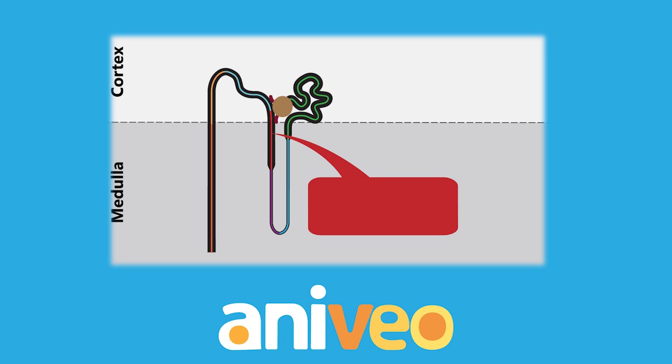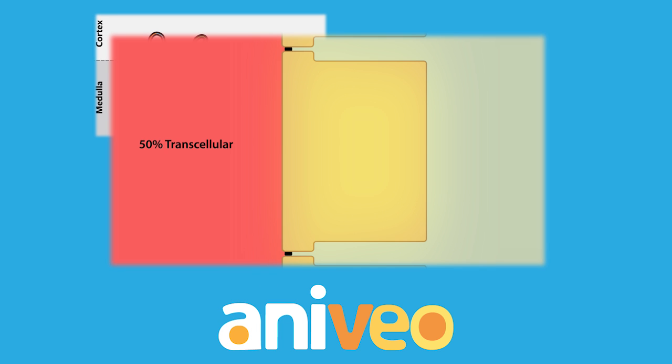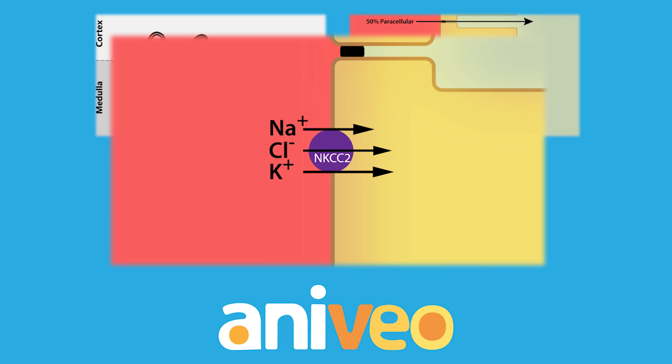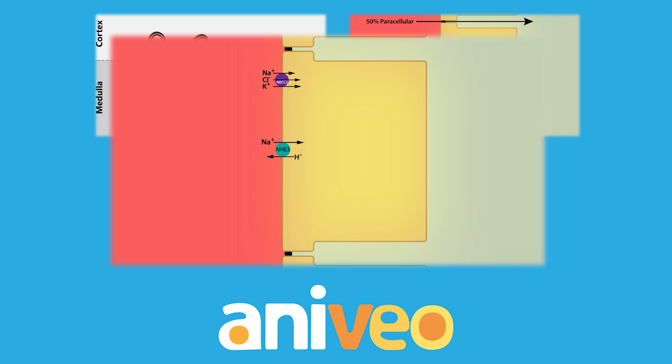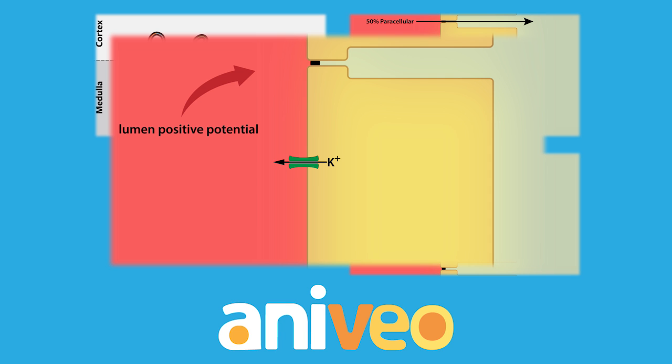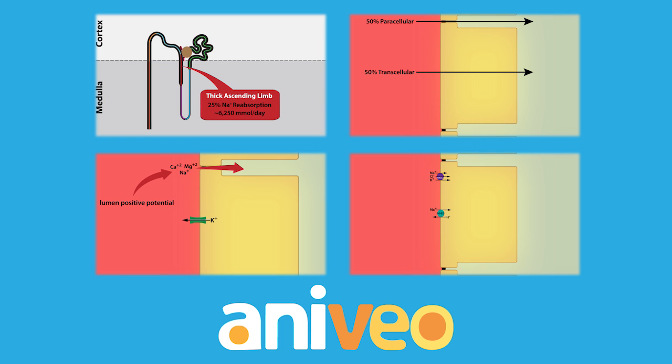In conclusion, 25% of the filtered sodium load is reabsorbed along the thick ascending limb. Half is reabsorbed transcellularly and the other half is reabsorbed paracellularly. The NKCC2 cotransporter represents the major transcellular route, while the NHE3 exchanger represents the minor transcellular route. And finally, the lumen-positive potential established by the presence of the apical potassium ion channels drives paracellular reabsorption of sodium, calcium, and magnesium ions.